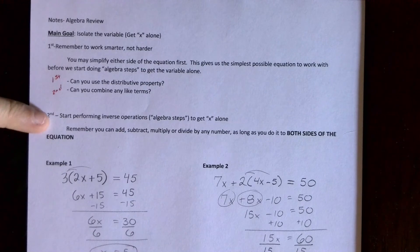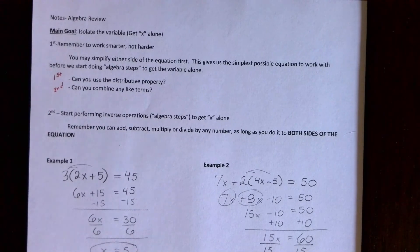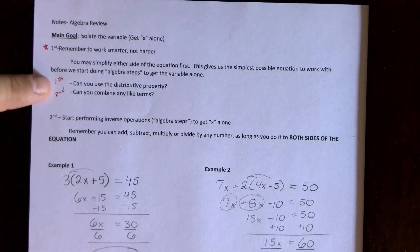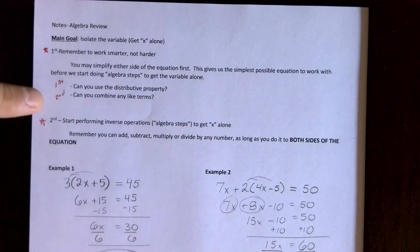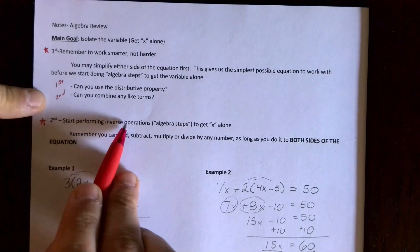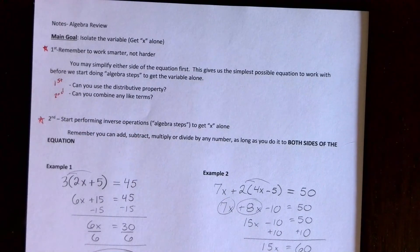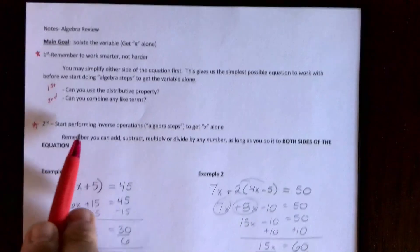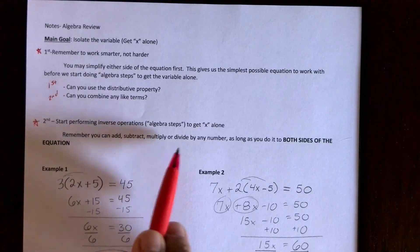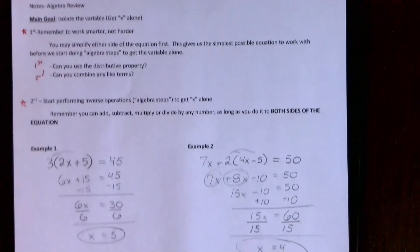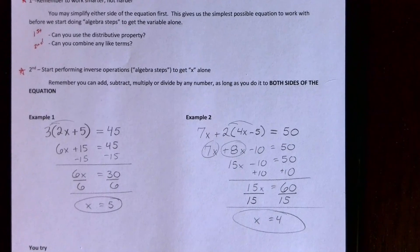After you've simplified as much as possible, your next major step is doing the algebra, and that's what we call the inverse operation. That's what we always say, the opposite. So if you're adding 7 you do the inverse and subtract 7 from it or whatever. Remember that you're allowed to add, subtract, multiply or divide by any number as long as you do it to both sides of the equation. That's what we call the inverse operation step or the algebra step, is what I've referred to it for most of the year.